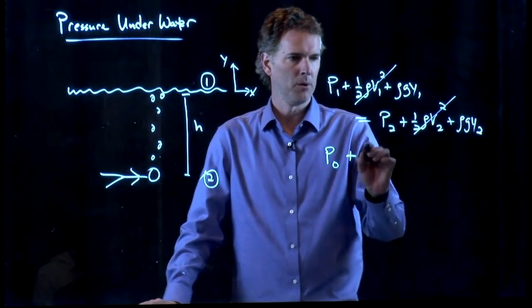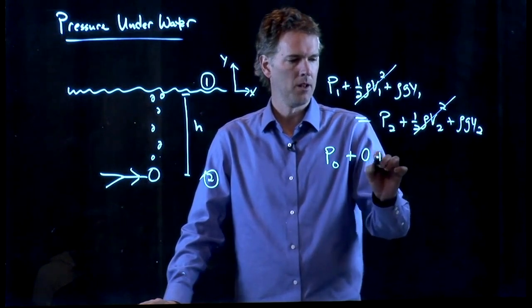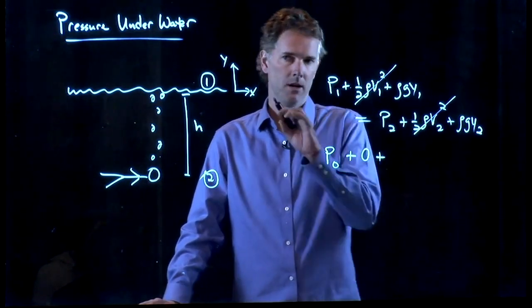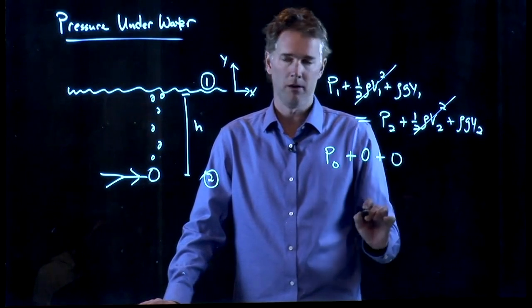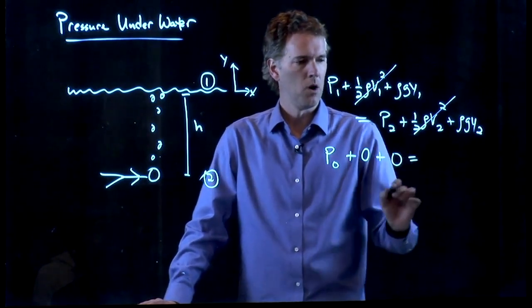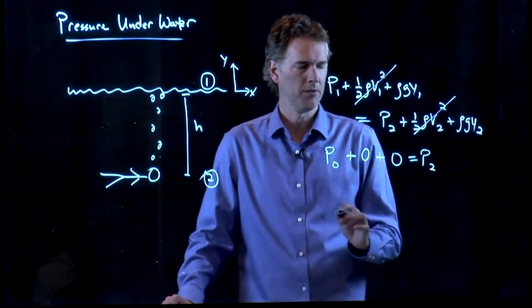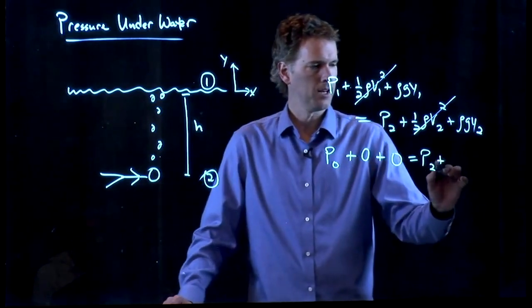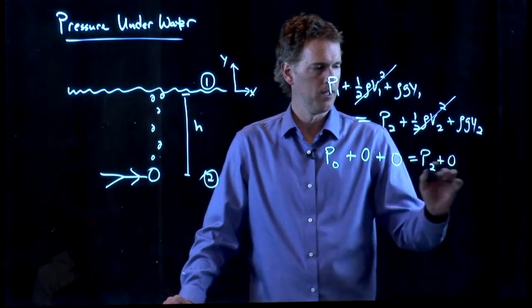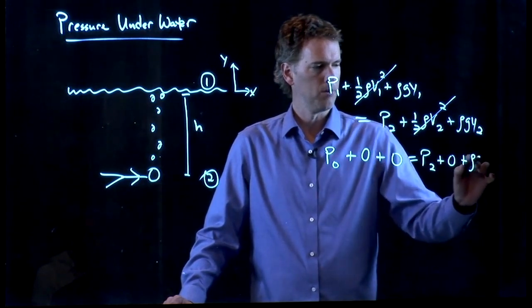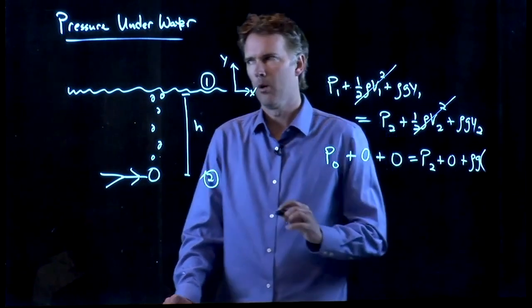So what do we get? Zero for that one. Rho GY1 goes to zero as well. Over on the right side, we have pressure two, what we're interested in. The kinetic energy term went away. And then we have rho G times Y2.